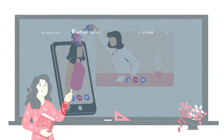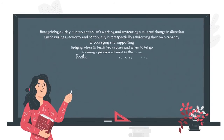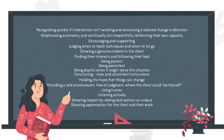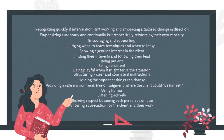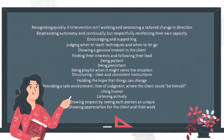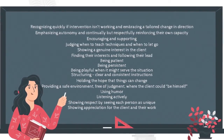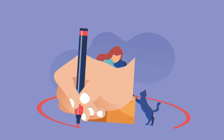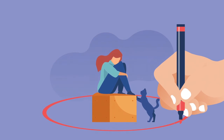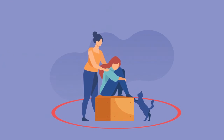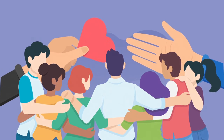I will mention several examples of the many indicators of sensitivities displayed here: recognising quickly if intervention isn't working and embracing a tailored change in direction; emphasising autonomy and continually, but respectfully, reinforcing their own capacity; encouraging and supporting. The verbal and social limitations of the autistic population have too often led therapists to approach them on a purely behavioural basis, when in fact they are even more in need than the general population of a therapeutic language that embraces them.